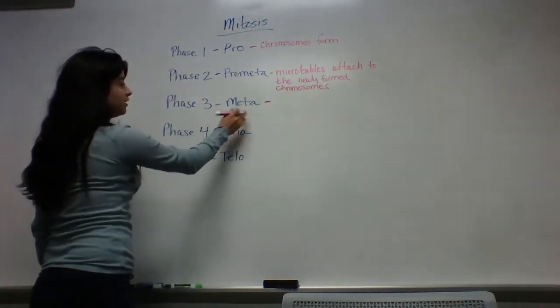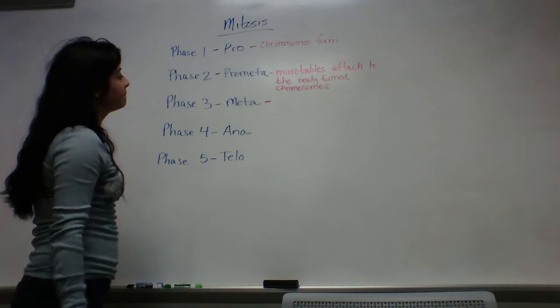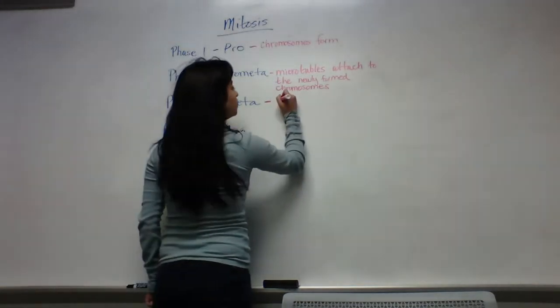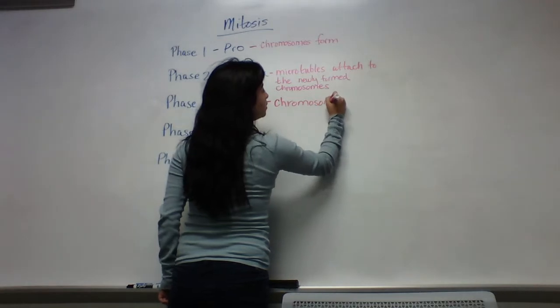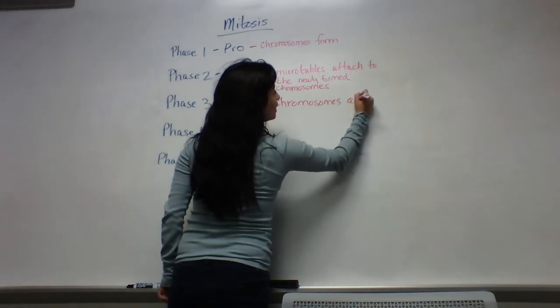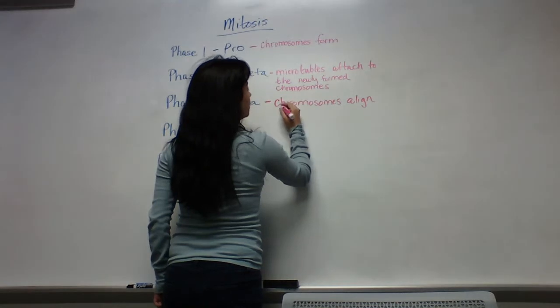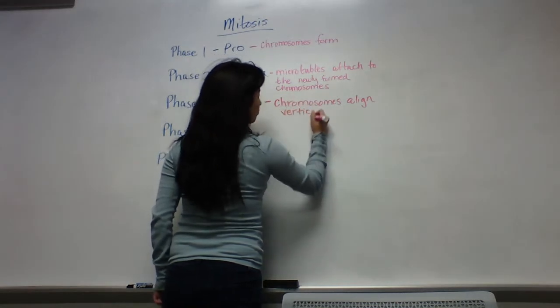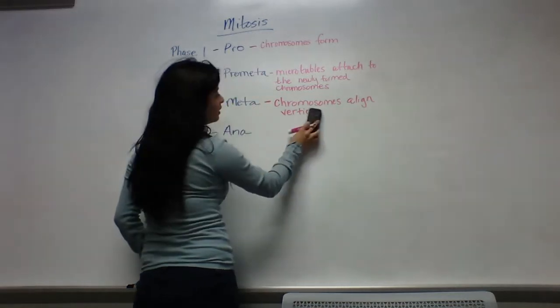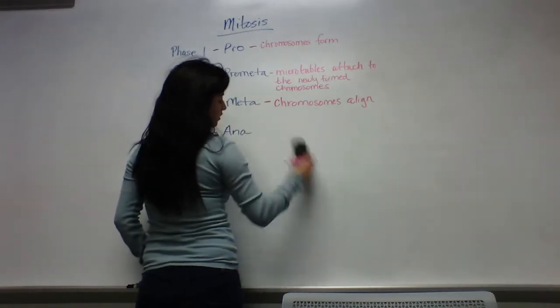And in phase 3, which is meta, meta is where the chromosomes align. They align. I was going to say vertically, but depending on where you are, it can be horizontally.